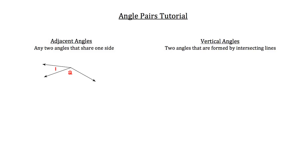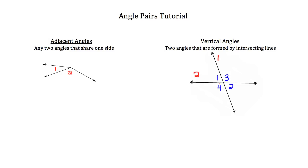Vertical angles are two angles that are formed by intersecting lines. Here's an example of vertical angles. You can see this line here, which I'll mark as line 1, and this line going left and right that I'll mark as line 2. When line 1 and line 2 intersect, they create four angles that we've labeled 1, 2, 3, and 4.